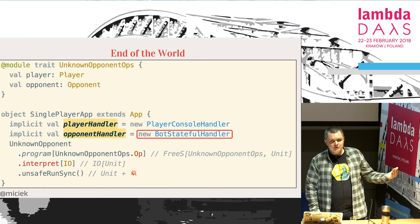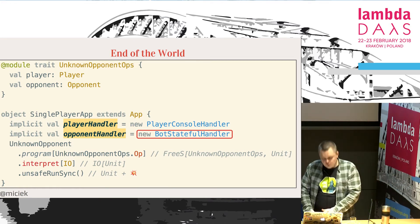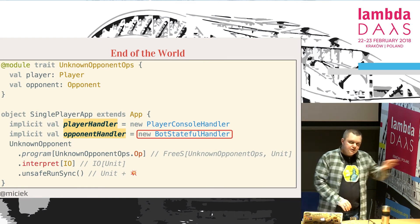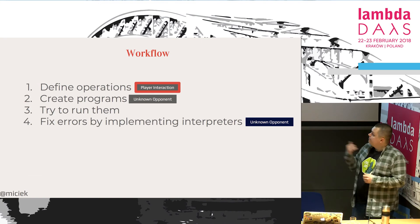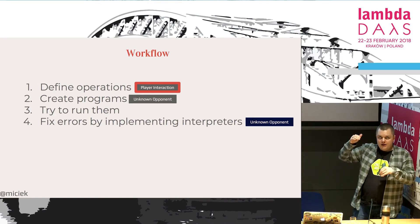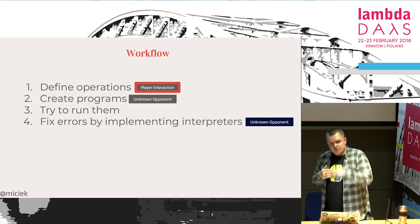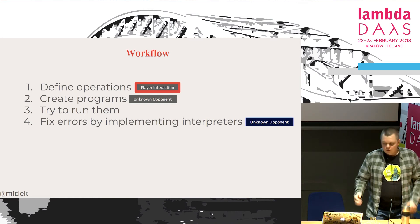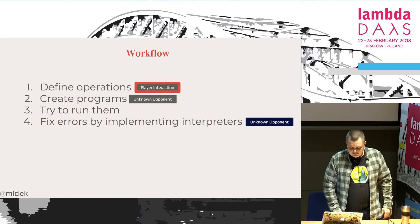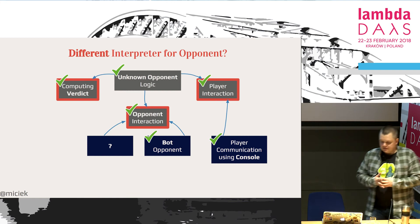The bot stateful handler is a simple implementation using var, bots, and map with some strategies — doesn't really matter. This is just one piece of code in one place; somebody needs to think about the strategies. So we just put it here and can run our application. This is our single player application where we reused as many things as we could, created a new algorithm and a new bot handler, while print lines and all those things remain the same. The workflow is: define operations using @free or final case classes, create programs using for comprehensions, try to run them — the compiler tells you which handler is missing — implement the handler into IO, and repeat until you get a successful game.